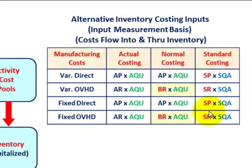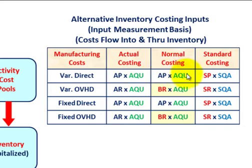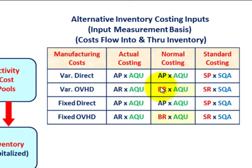For standard costing, you use a predetermined or standard price or rate times a standard quantity allowed — based on that predetermined amount. For normal costing, it's very much like actual costing: for variable direct and fixed direct amounts, you use actual price times actual quantity used, just like actual costing. However, for variable overhead and fixed overhead, you use a budgeted rate for the period times actual quantity used. That's the key difference between actual and normal costing — for overhead, normal costing uses a budgeted rate rather than the actual rate.